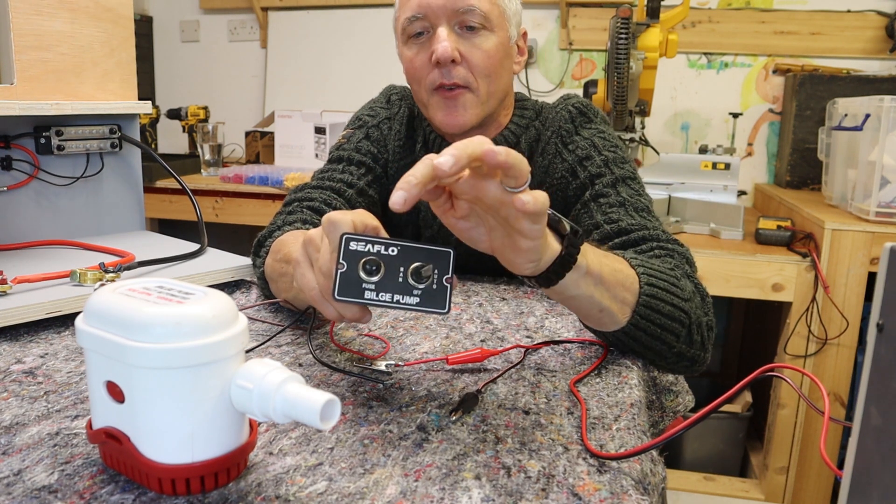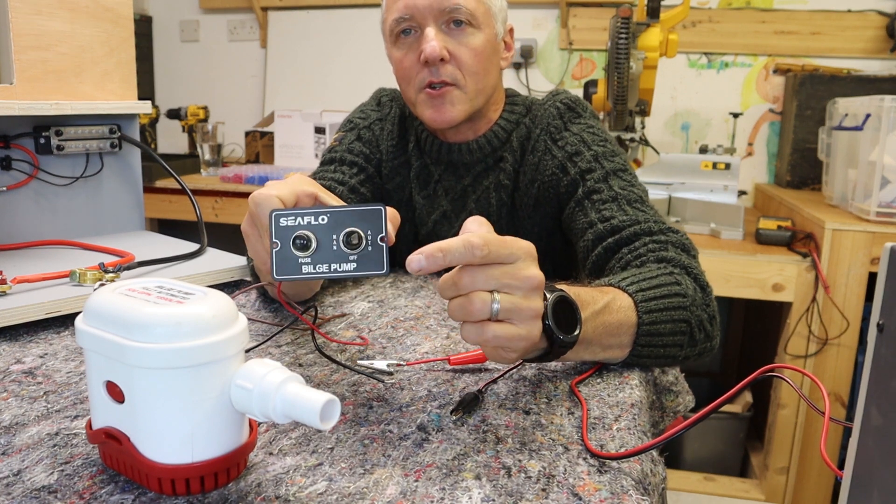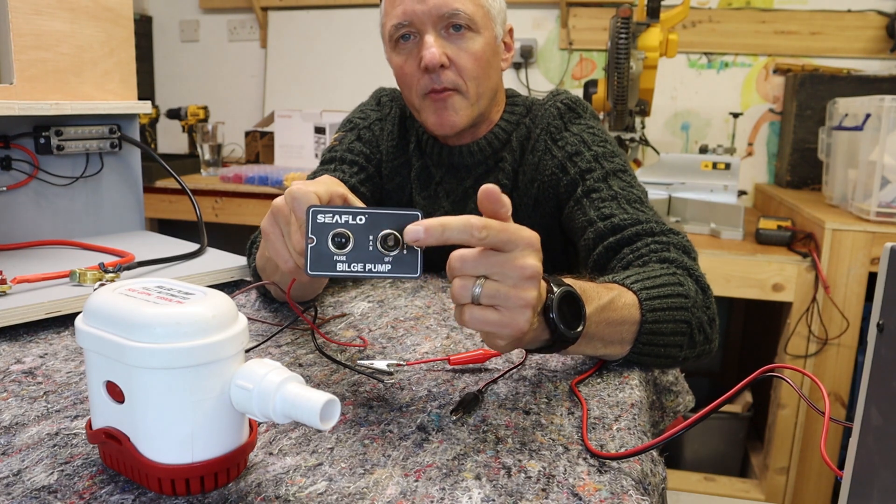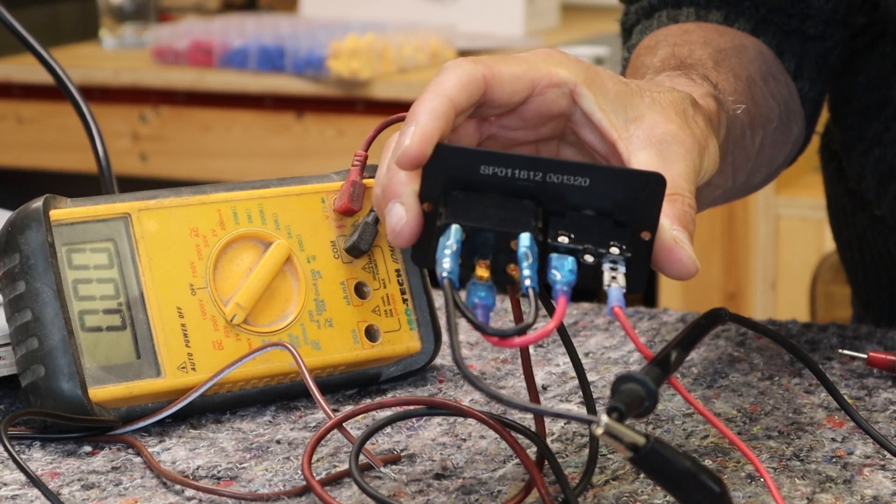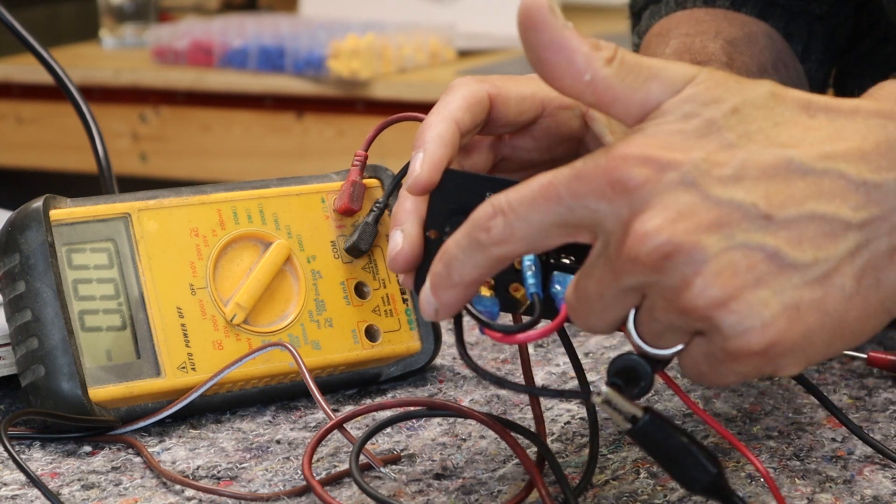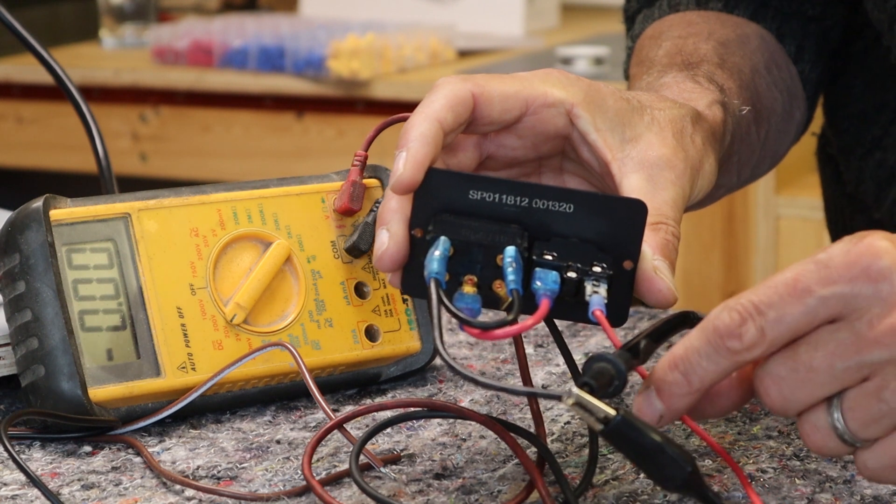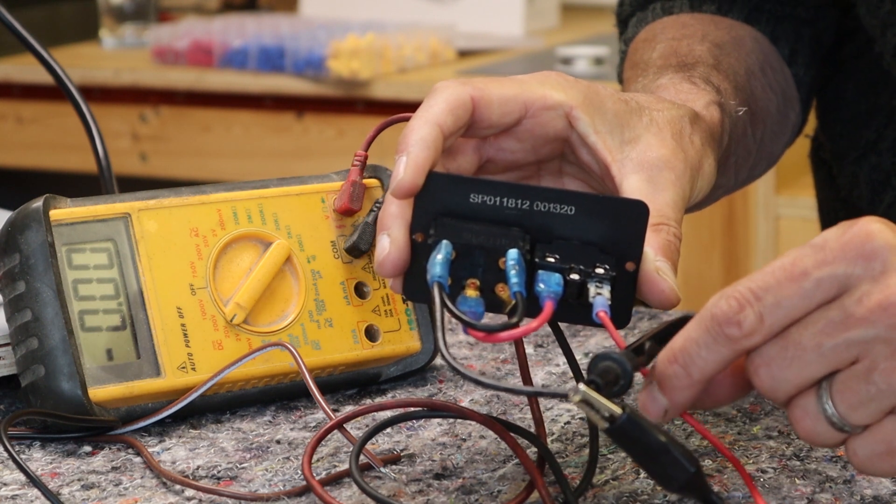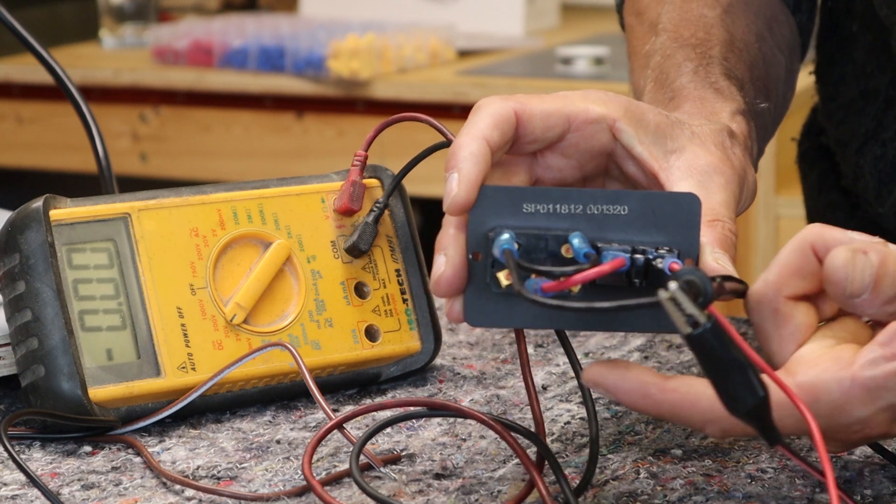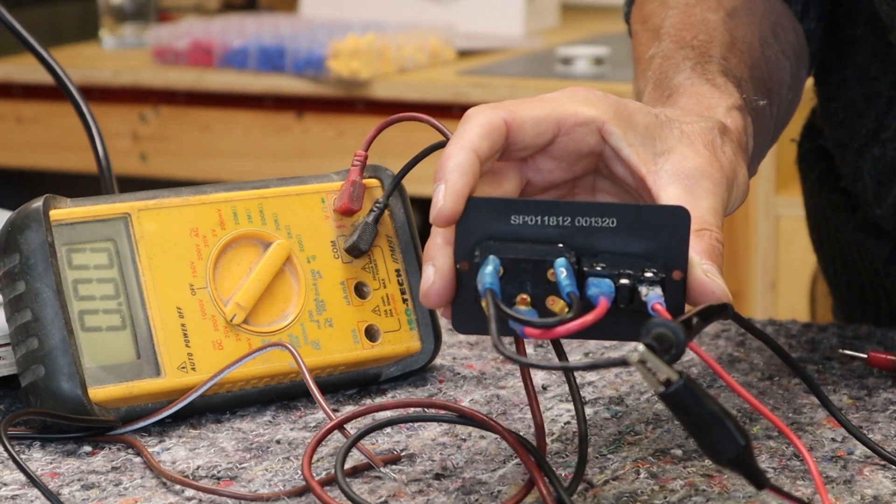The Seaflow panel has got a built-in fuse and this switch which can go onto automatic mode or onto manual mode. Now looking at the back of this switch panel, essentially we've got the negative going to this black one here, we've got the positive feed going to this one here, and we're going to pick up on these two lower spade connectors here for auto and manual mode.